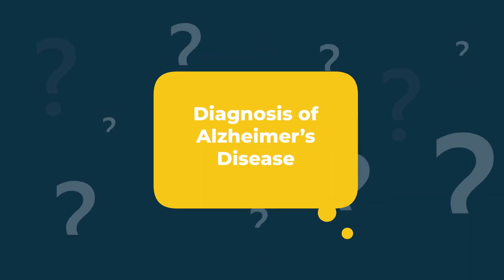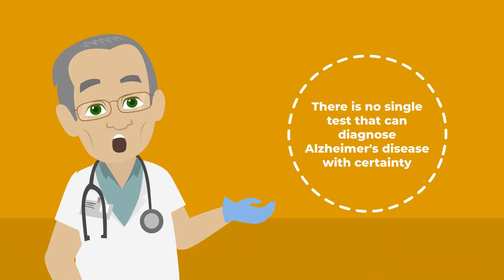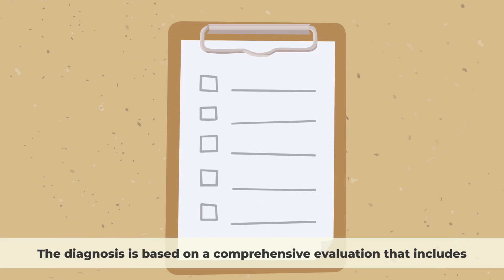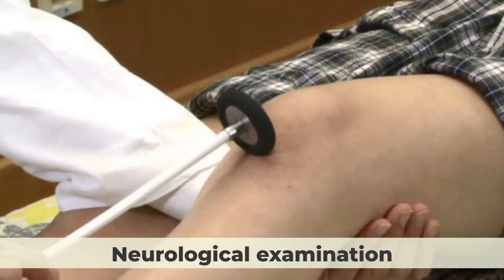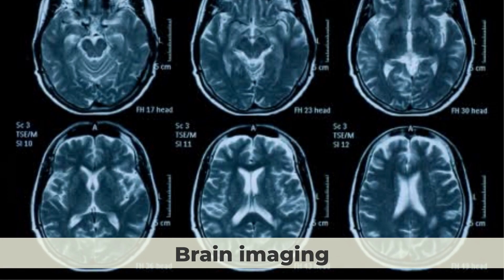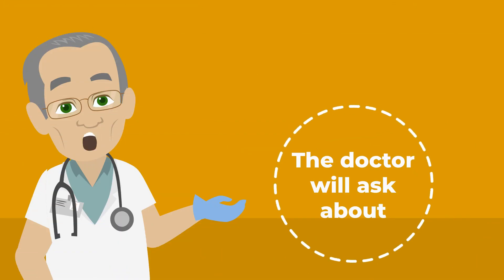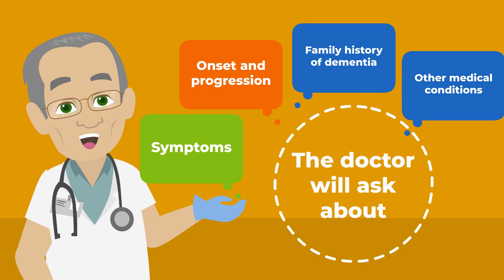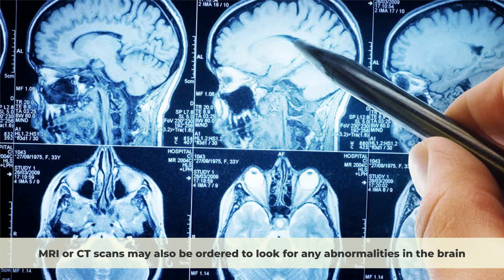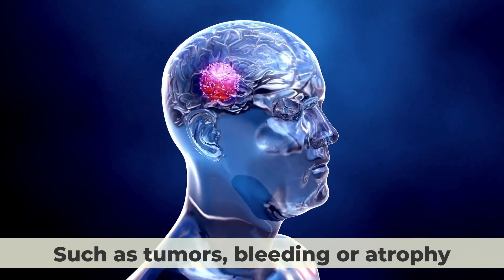There is no single test that can diagnose Alzheimer's disease with certainty. The diagnosis is based on a comprehensive evaluation that includes medical history, physical examination, neurological examination, blood tests, and brain imaging. The doctor will ask about the symptoms, their onset and progression, family history of dementia, and other medical conditions that may affect cognition. MRI or CT scans may also be ordered to look for any abnormalities in the brain, such as tumours, bleeding, or atrophy.